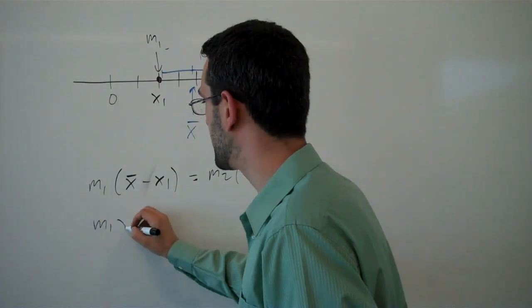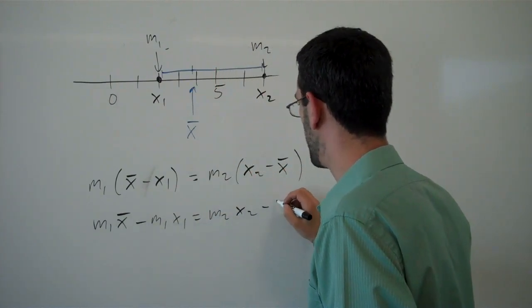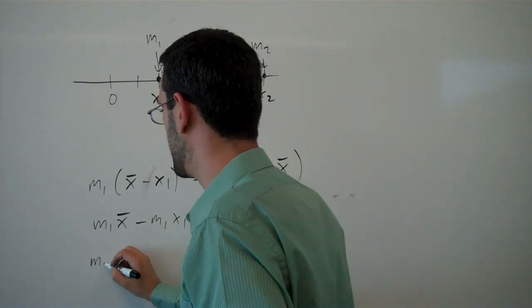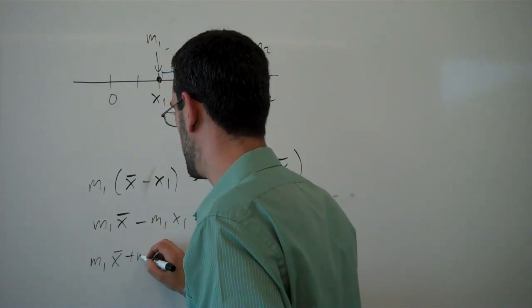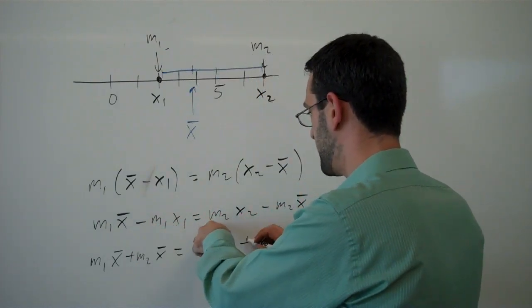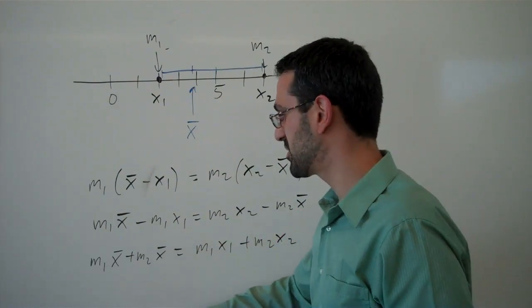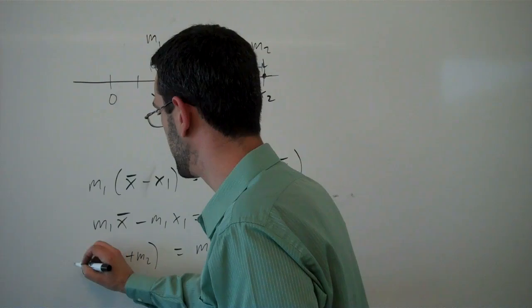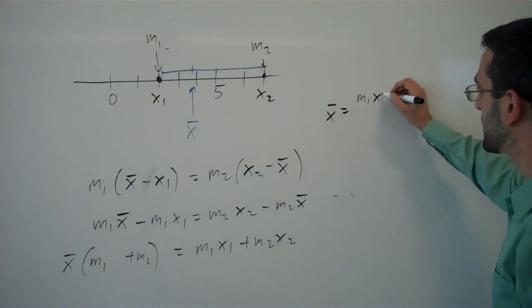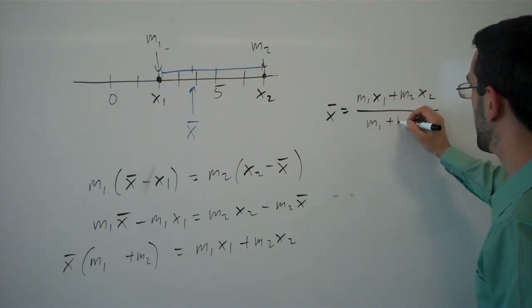And solving this for x̄, let's see if we can do that. Grouping all the x̄ on the left and everything else on the right, so we're going to move this over. We can factor out an x̄ here, so we're going to factor an x̄ out and divide. So, x̄ will be m₁x₁ plus m₂x₂ over m₁ plus m₂.